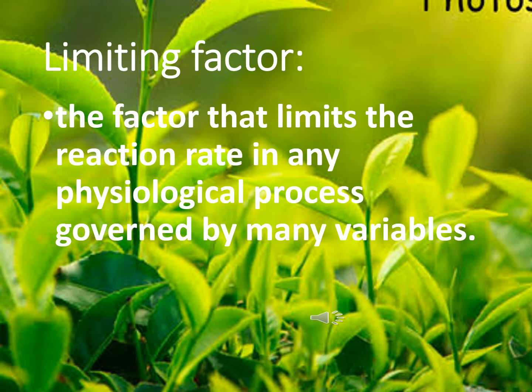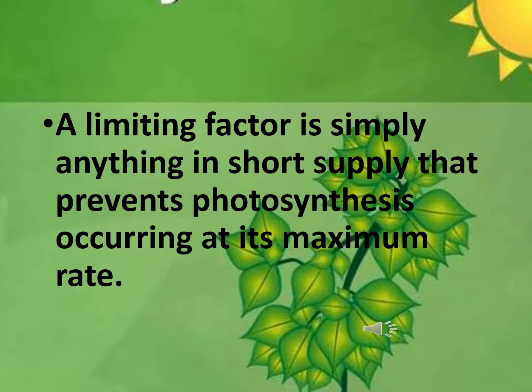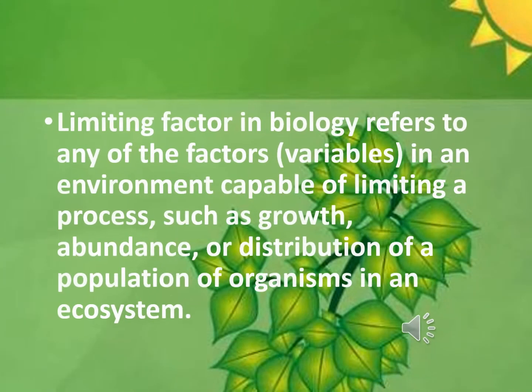Firstly, we are going to describe what a limiting factor is. A limiting factor is the factor that limits the reaction rate in any physiological process governed by many variables. Simply put, a limiting factor is anything in short supply that prevents photosynthesis occurring at its maximum rate. If photosynthesis occurs more slowly in plant cells, then a lower quantity of sugar will be produced and the quantity of chemical energy available for cell growth will be reduced.